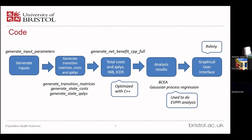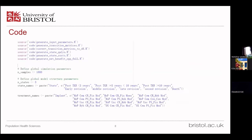Here is the map of how I modularized this project. First, it generates input parameters, then generates transition matrices, costs, and qualities, and then uses the generate net benefit function to calculate total cost, total qualities, incremental net benefits, and ICERs. The generate net benefit function was optimized with C++. After obtaining the results, we analyze them with the BCEA package, plot CEAC panels, and use Gaussian process regression to do a value of information analysis. Finally, we use the Shiny package to create a graphical user interface.